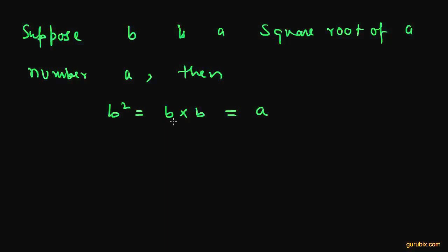Therefore, we can say that the product of square root by itself gives the number A. And the square root of A is denoted by root A, like this.